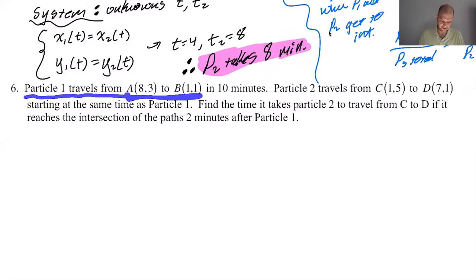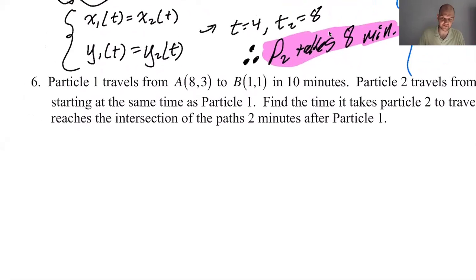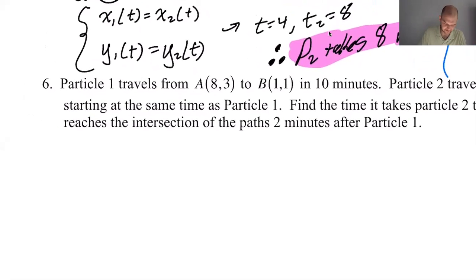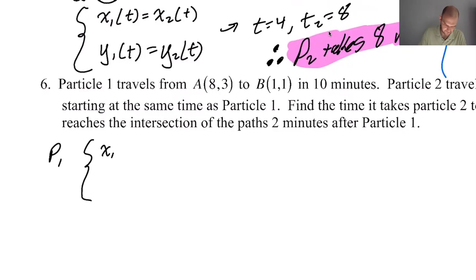Alright, this is a question with a twist. So particle 1 travels from A(8,3) to B(1,1) in 10 minutes, no problem. Let's write those equations so we can move on from there. So P1, we got an x1 and a y1. P1 starts at 8, 3, gonna lose 7 in 10, and gonna lose 2 in 10, but only takes 10 minutes.